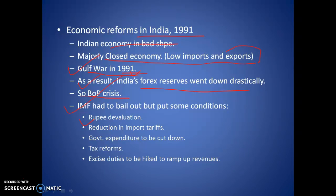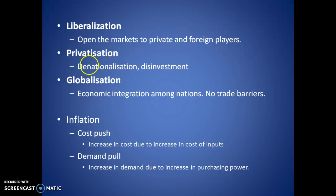The IMF put some conditions on us: rupee devaluation — we had to decrease the value of the rupee — reduction in import tariffs, opening the market for imports and exports, cutting government expenditure, tax reforms, and increasing excise duties to ramp up government revenues. These were the steps required from the IMF side.